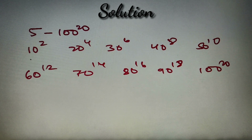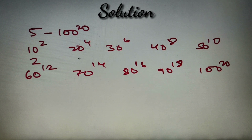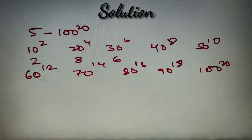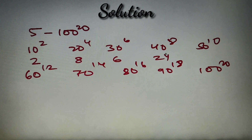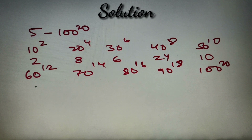For 10 raised to power 2, we get 2 powers of 2. For 20 raised to power 4, we get 8 — since 20 contains 2 squared, we get 2 times 4 equals 8. For 30 raised to power 6, we get 6 powers of 2. For 40 raised to power 8, we get 24 powers of 2, because 40 contains 2 cubed, and 3 times 8 equals 24. For 50 raised to power 10, we get 10 powers of 2. For 60 raised to power 12, we again get 24 powers of 2.